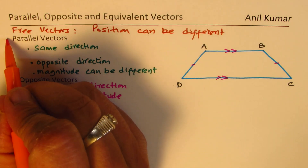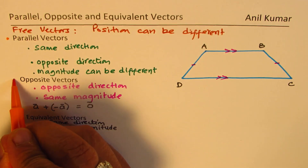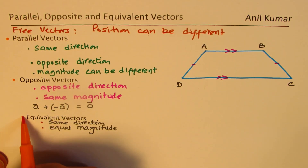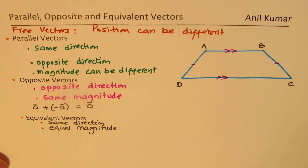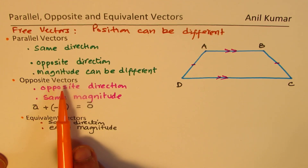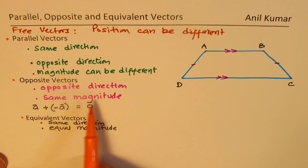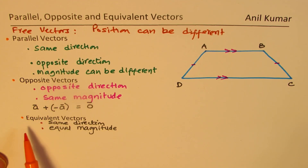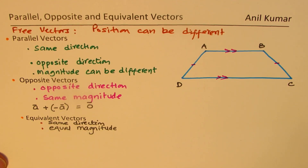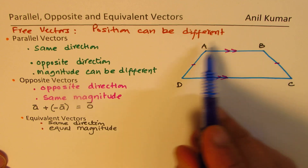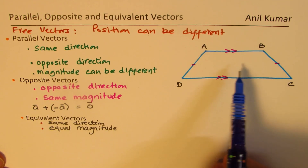For parallel vectors, they have same or opposite direction, and magnitude can be different. For opposite vectors, we have equal magnitude but opposite direction — think of it as equal and opposite. And equivalent means same direction and same magnitude. We will also consider writing them as an equation in the trapezoid diagram.